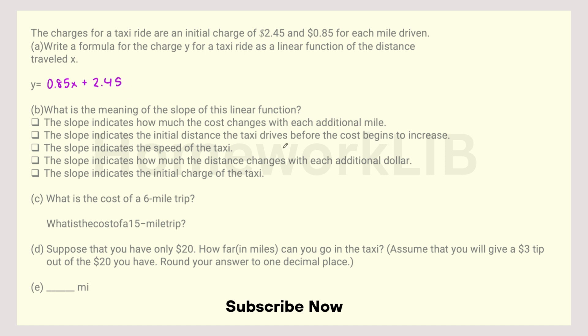What is the meaning of the slope of this linear function? The slope indicates how much the cost changes with each additional mile. The slope indicates the initial distance the taxi drives before the cost begins to increase. The slope indicates the speed of the taxi. The slope indicates how much the distance changes with each additional dollar. The slope indicates the initial charge of the taxi. So the slope indicates how much the cost changes with each additional mile because it's the cost per mile.